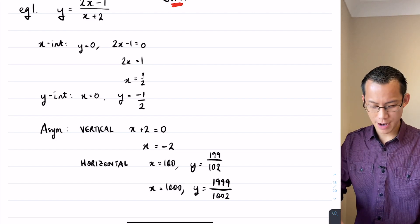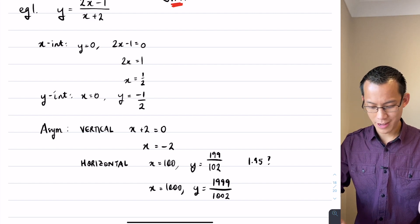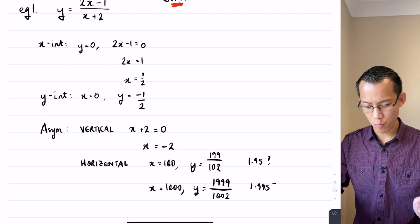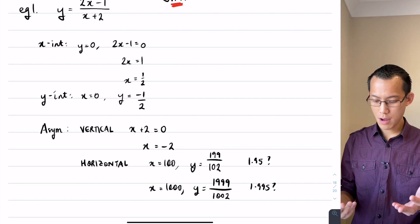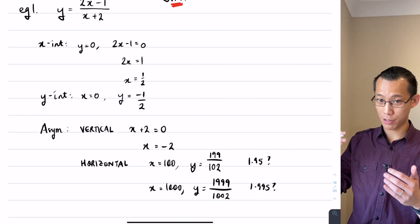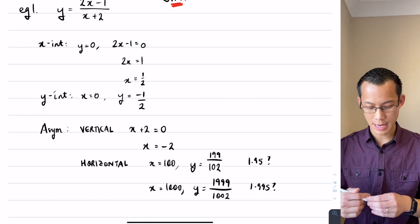Okay, so I'm approaching something, right? 1.95, 1.995, what am I approaching? And the answer is I'm clearly approaching 2, and I'm approaching it from underneath 2, right? I'm just beneath 2 and I'll get closer and closer to that.